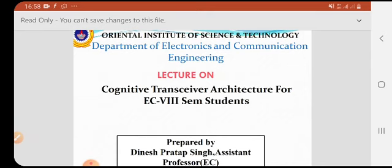I will take lecture on cognitive transceiver architecture. This is cognitive transmitter and receiver that is used in cognitive radio network. In one system there is both transmitter and receiver.